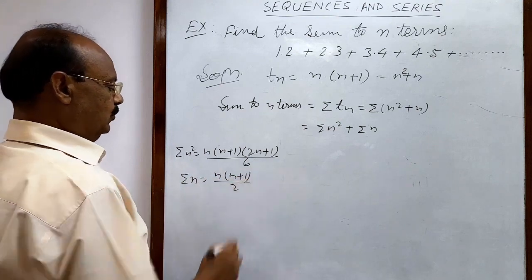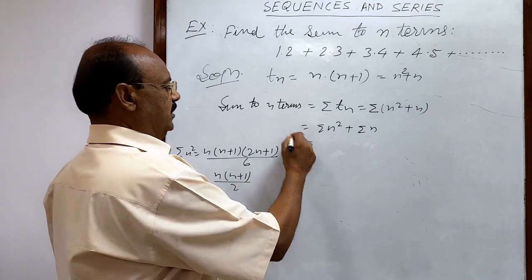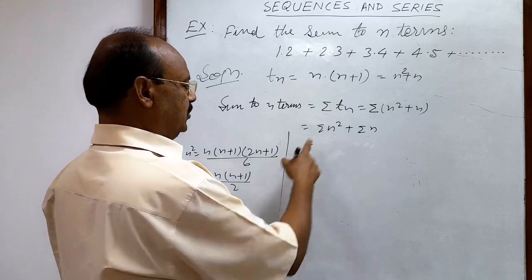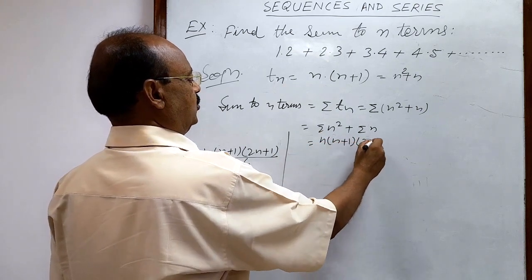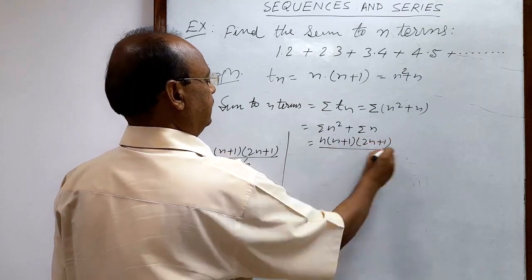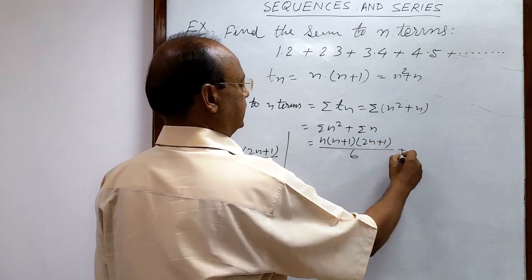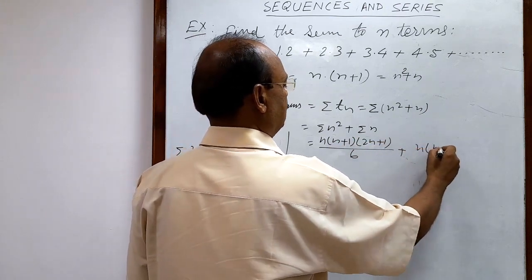Let us put these values here. Sigma n² is n(n+1)(2n+1)/6, and sigma n is n(n+1)/2.